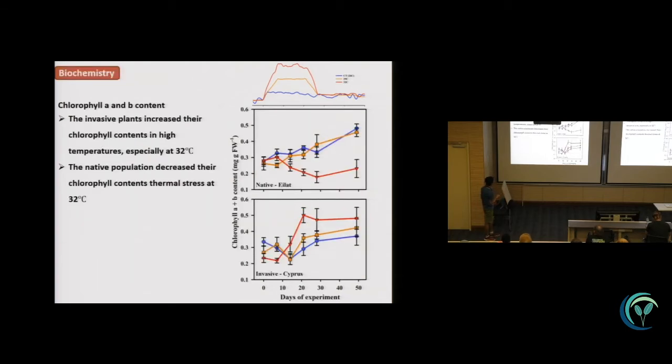The second thing is the biochemistry results. We can see here the native plants reduce the chlorophyll A and B content under high temperatures, while the invasive plant, another way around, increased the chlorophyll content at 32 degrees.